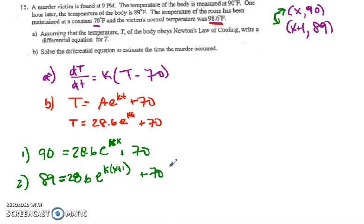And then the easiest thing to do would be to subtract 70 from both sides of both equations. So we'll have 20 equals 28.6e^(kx) and 19 equals 28.6e^(k(x+1)). Now I'm going to suggest we could divide both sides by 28.6, but we could actually do something a little bit different.